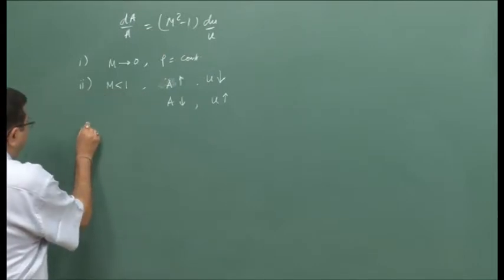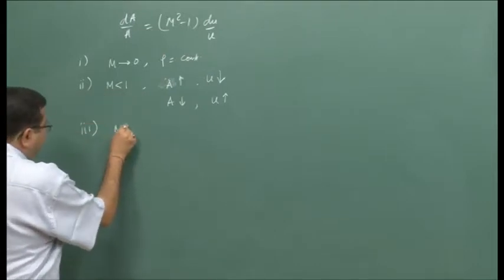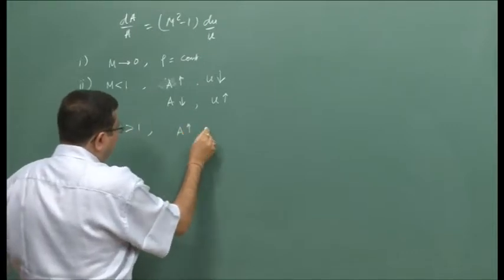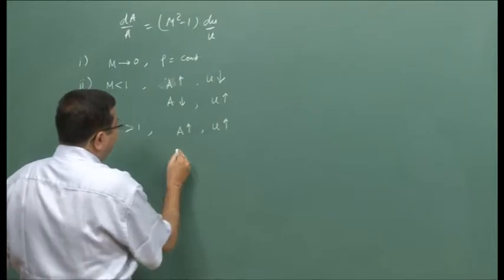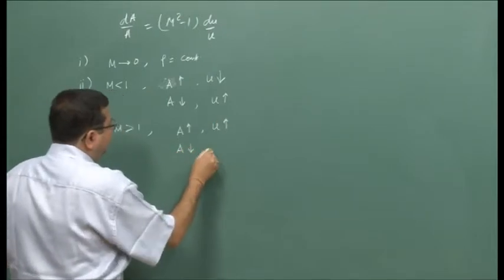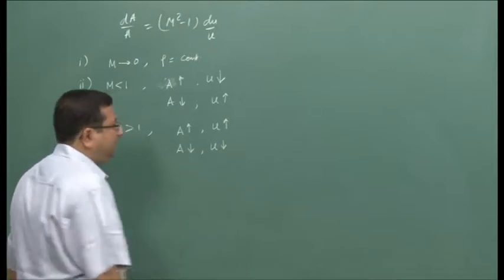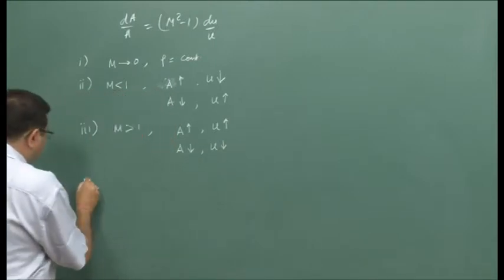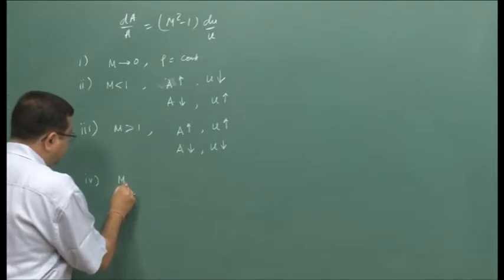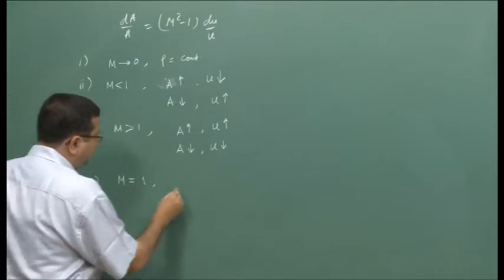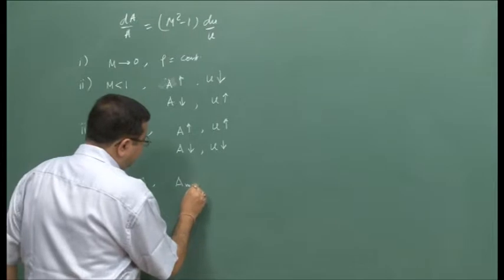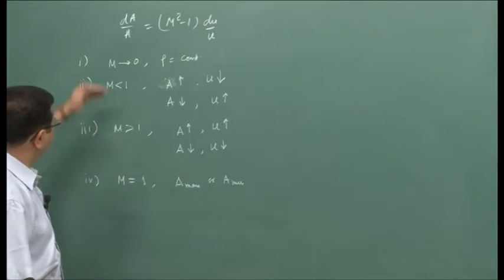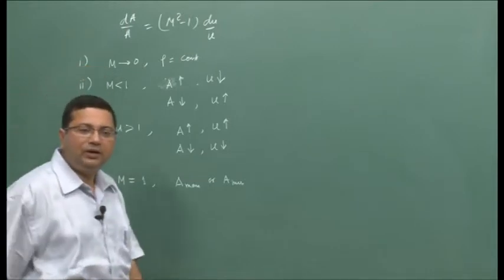Then we have shown that it is the other way round for a supersonic flow. For a supersonic flow, as area increases velocity increases, and as area decreases velocity decreases. And we have also shown that in the limiting case, when Mach number is equal to 1, area is either a maximum or a minimum. This we have shown from the area-velocity relationship.